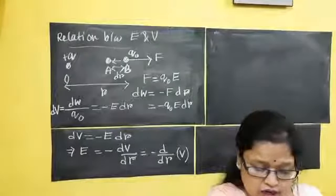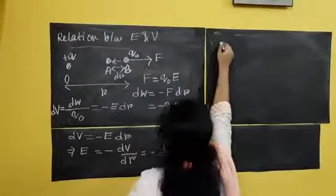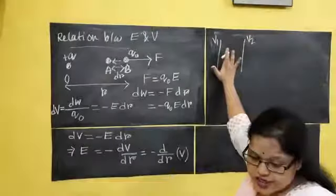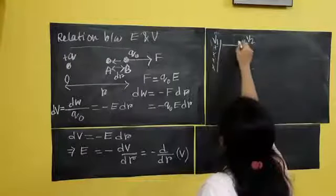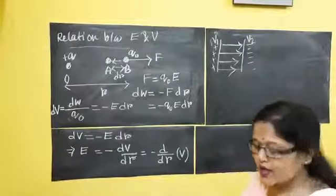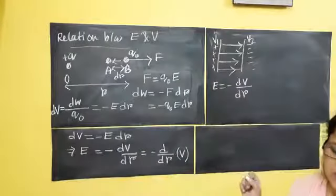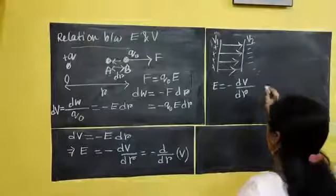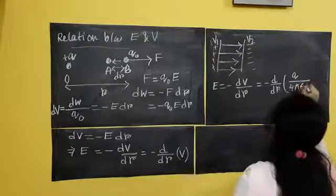Now, the importance of this relation. Suppose I have one potential zone V1 and another V2, one with all positive potential and another with all negative potential. The electric field goes from positive to negative. Electric field E = –dV/dR. If I know the potential, I can calculate the electric field, and vice versa.